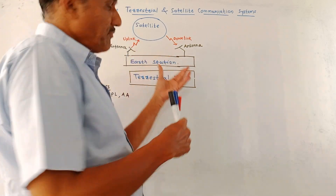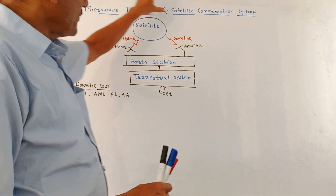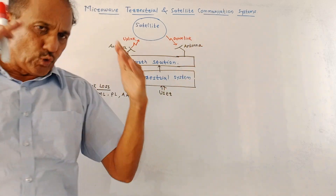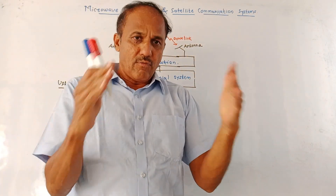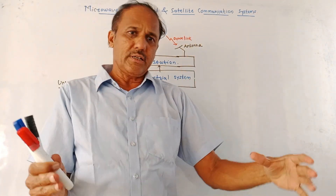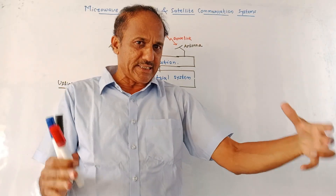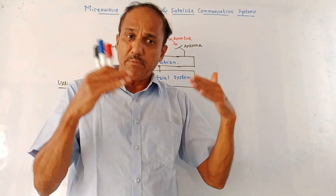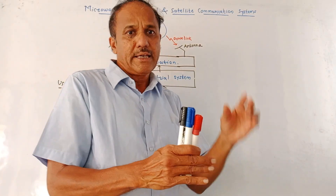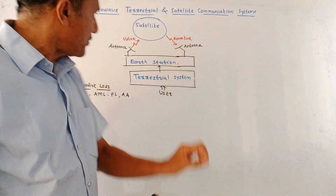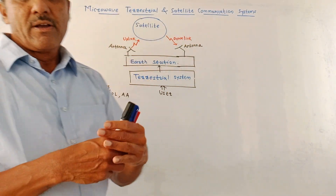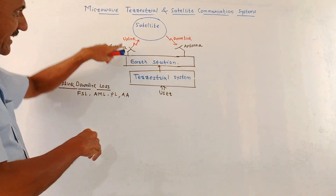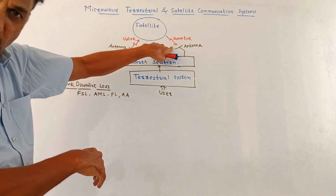This is the simplified block diagram of a microwave satellite communication system. There are two major terms: one is the space component — the satellite in space itself — and another very important component is the earth station or ground station. There are also two terminologies: uplink and downlink.